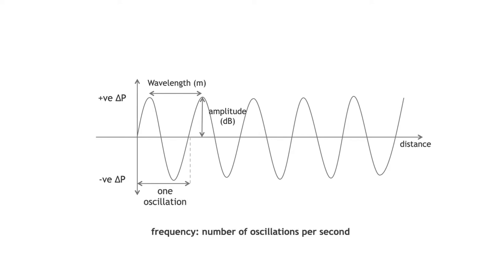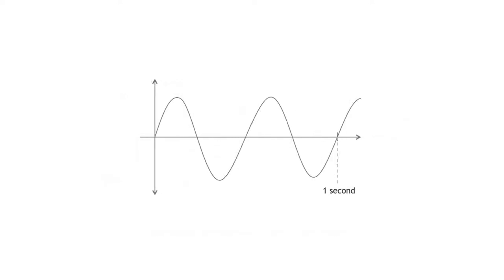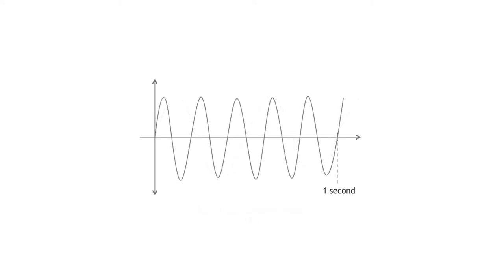Frequency is the number of oscillations occurring in one second, measured in hertz (number of oscillations per second). In this diagram, two full oscillations occur in one second, giving a frequency of two hertz. A higher frequency wave has more oscillations per second — counting them you can see five oscillations in one second, meaning a frequency of five hertz.